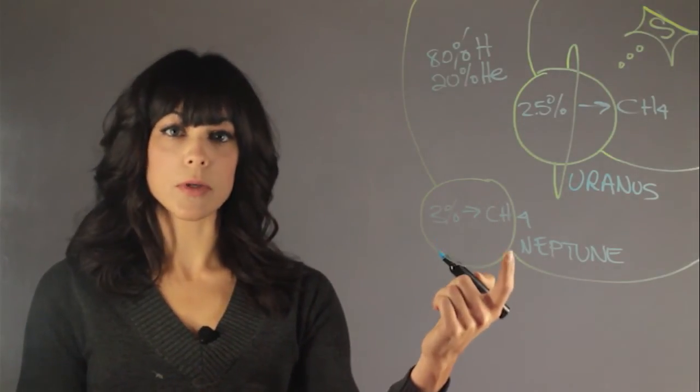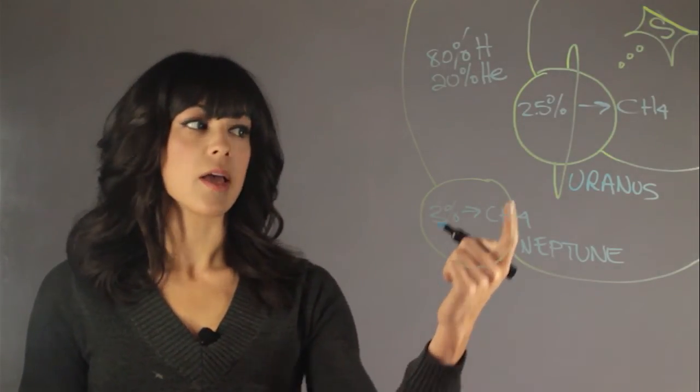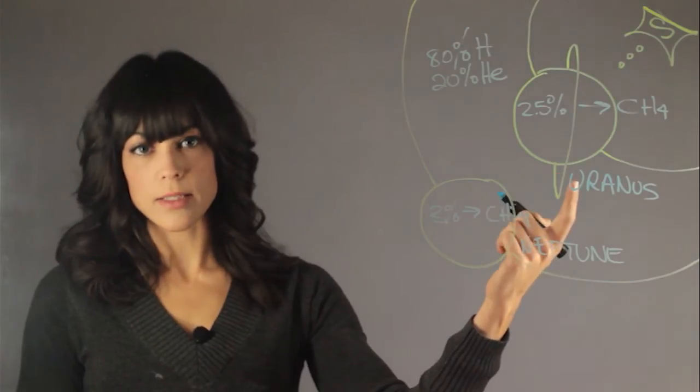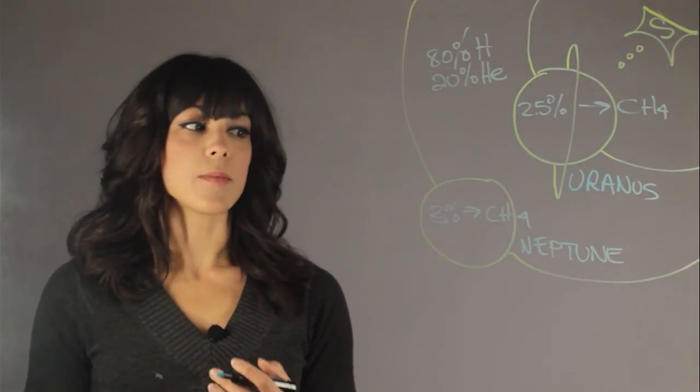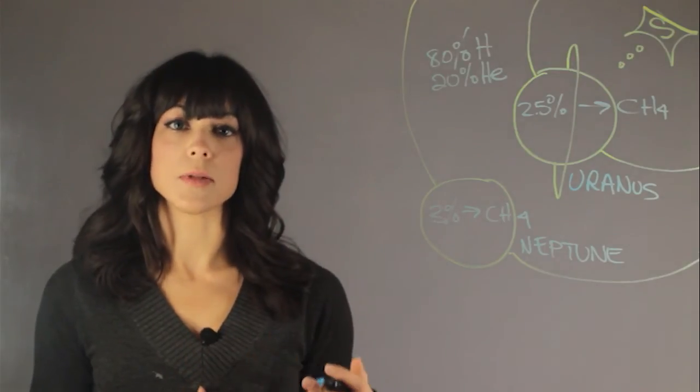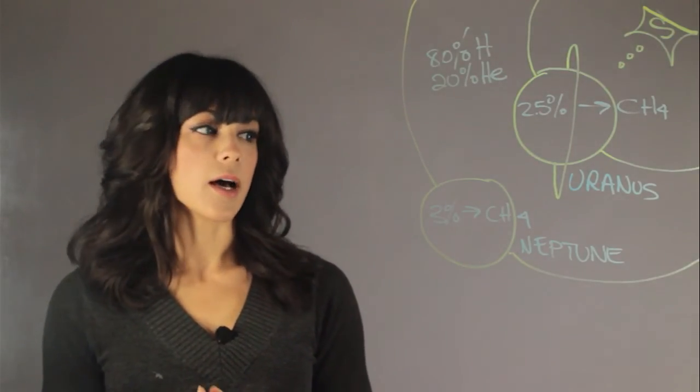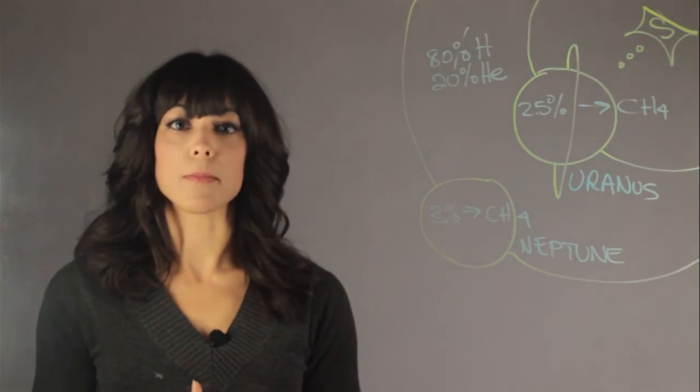So Neptune is a little more blue because it has a lot more methane and Uranus has less blue because it has a lot less methane. So the methane composition reflects back the blue and absorbs the red and this is why Uranus and Neptune are blue.